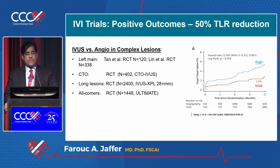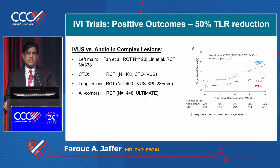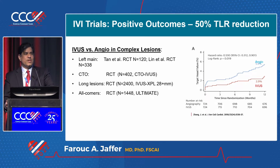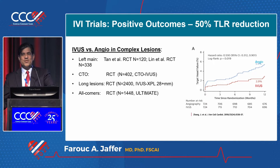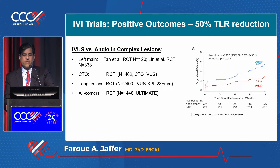Here's the clinical data: we have multiple randomized trials — left main, CTO, long lesions, all-comers — all showing about a 50% reduction in TLR. We don't need a next-generation stent before applying imaging; we can achieve a TLR reduction of 50% right now. This is incredibly helpful at the point of care, and there's now a lot of automation, particularly in the OCT era, making it fast and easy to address stent length and vessel preparation in your workflow.